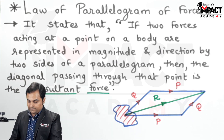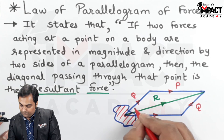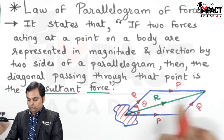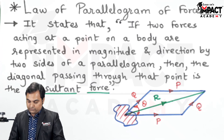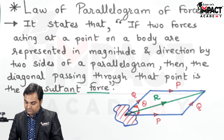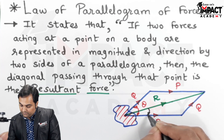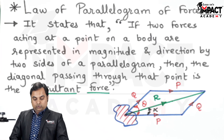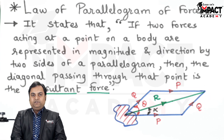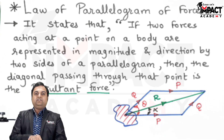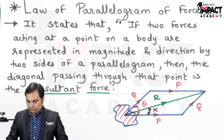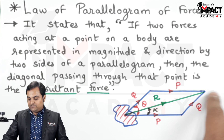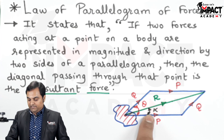The angle between both forces P and Q was theta, and the location of the resultant with the first force — this angle is alpha — that is nothing but the location of the resultant force denoted by alpha. As per the definition of the resultant, it is a single force which has the same effect as the combination of forces. Whatever effect is produced by the combination of P and Q would be replaced by a single resultant force acting at an angle alpha with respect to the first force.